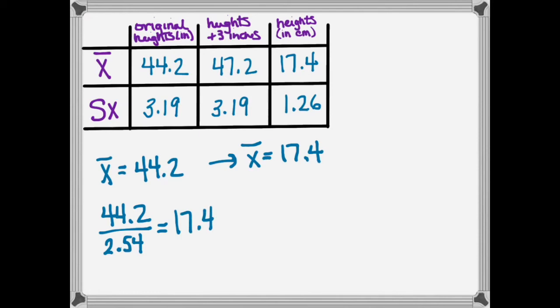For this one, the same exact thing is going to work for the standard deviation. We would take our original standard deviation of 3.19 and divide by that same value, and we would get 1.255, which rounds to 1.26.